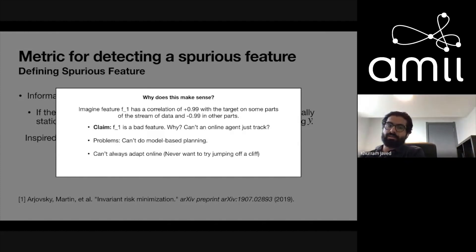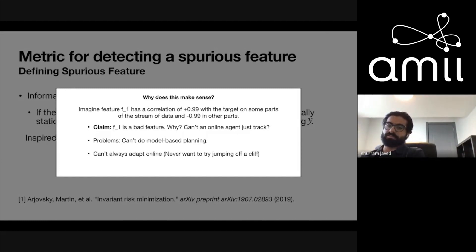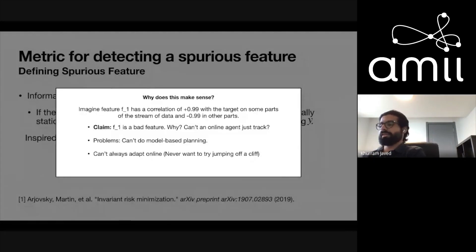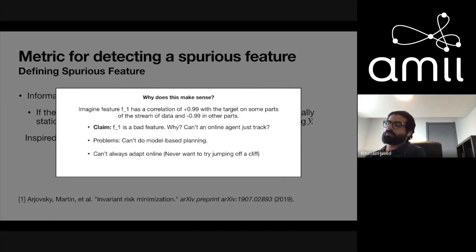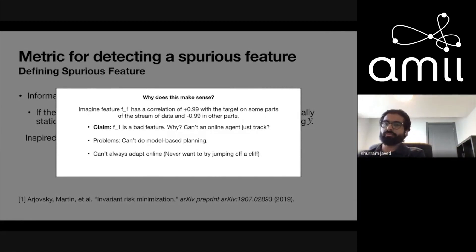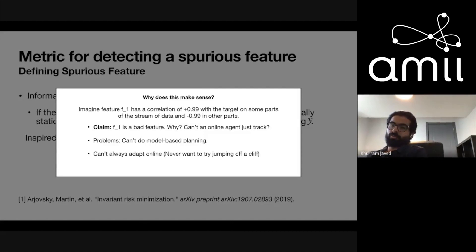Another reason we can't always adapt online is that we might want to generalize to cases we've never tried. For example, you might want to predict what happens if the agent jumps off a cliff — you can adapt features if you actually jump, but you don't want to do that. So you want zero-shot generalization sometimes.